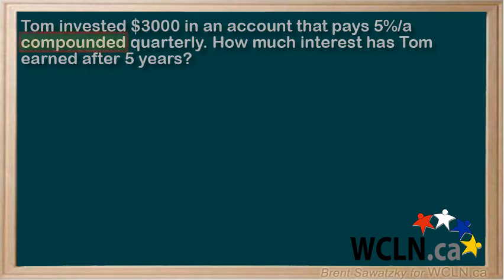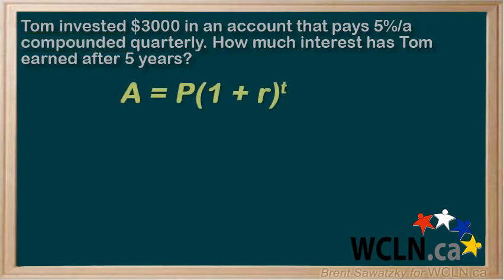So this is a compound interest question, so let's start off with our formula. A equals P times (1 plus R) to the T.